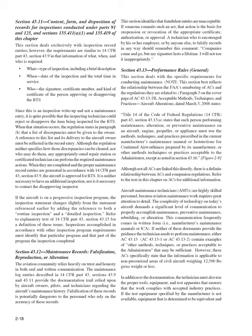If the aircraft is on a progressive inspection program, the inspection statement changes slightly by adding reference to both a routine inspection and a detailed inspection. Refer to explanatory text of 14 CFR Part 43, Section 43.15, for a definition of these terms. Inspections accomplished in accordance with other inspection program requirements must identify that particular program and the part of the program completed.